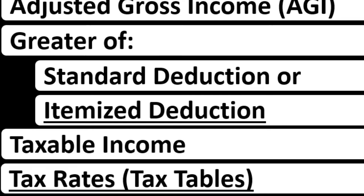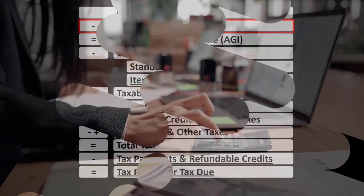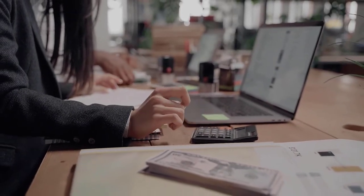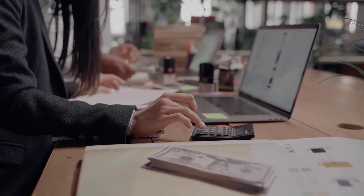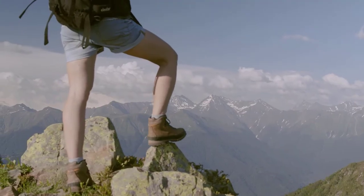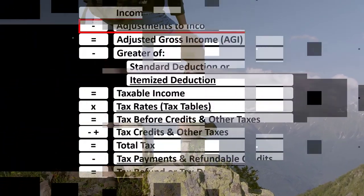Also noting that the subtotal of income minus these adjustments to income — adjusted gross income — is an important subtotal as well, because when we think about phase-outs due to income levels, such as phase-outs for expenses, deductions, and credits, they're often based not on the top-line income but rather on the adjusted gross income, the AGI.